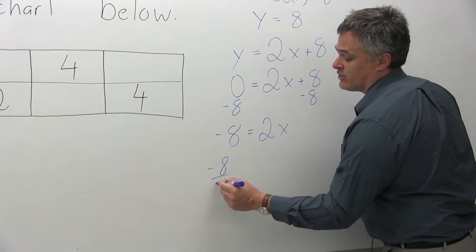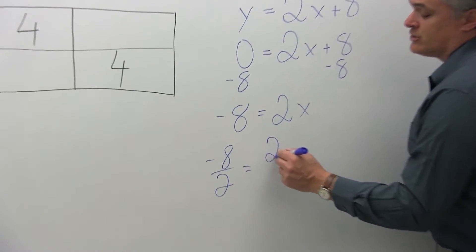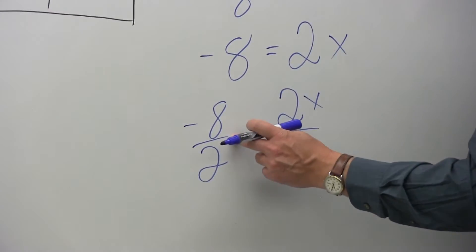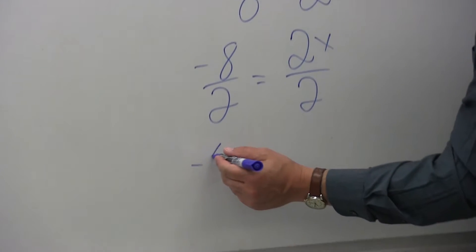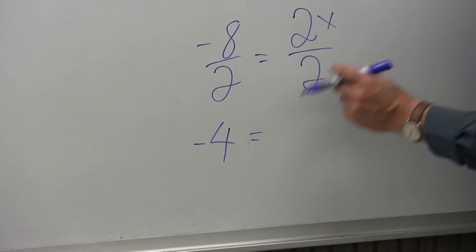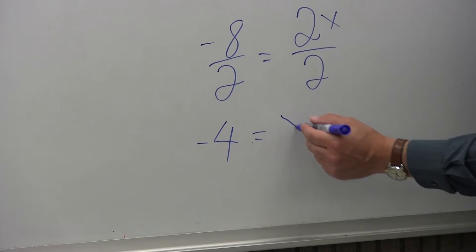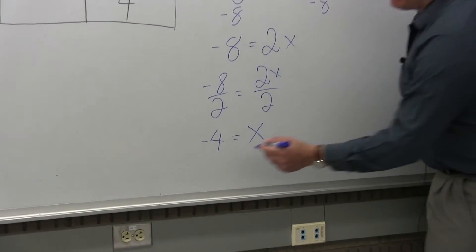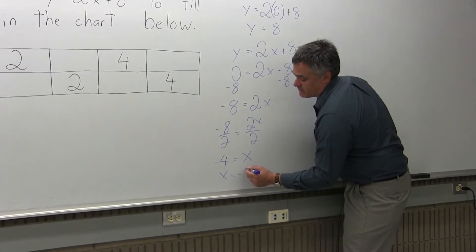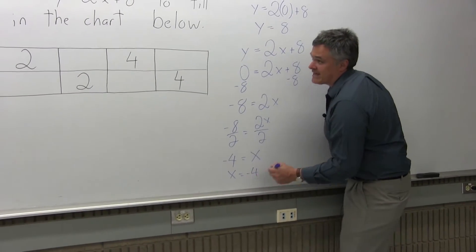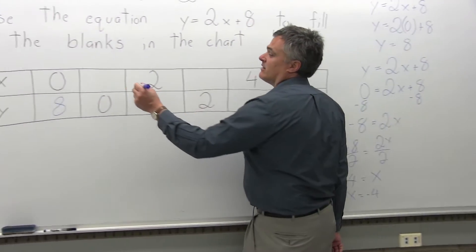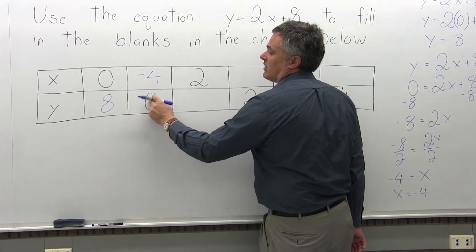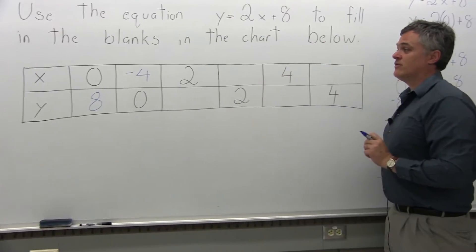To solve for x, divide both sides by the value in front of x. So negative 8 over 2 equals 2x over 2. On the left side, negative 8 over positive 2 is negative 4. On the right side, the 2's cancel, giving you negative 4 equals x, or x equals negative 4. If y was 0, x would be negative 4.